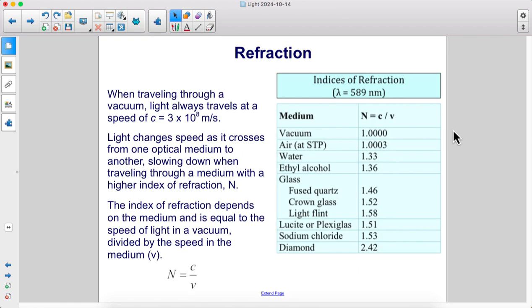Refraction. When traveling through a vacuum, light always travels at a speed of c, which is 3 times 10 to the 8th meters per second.